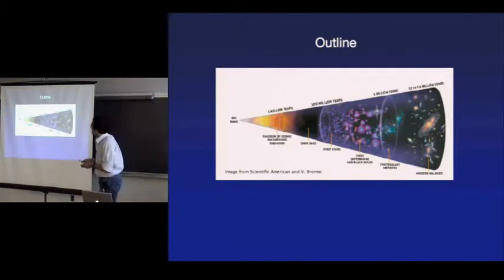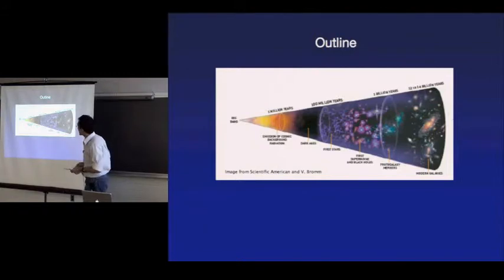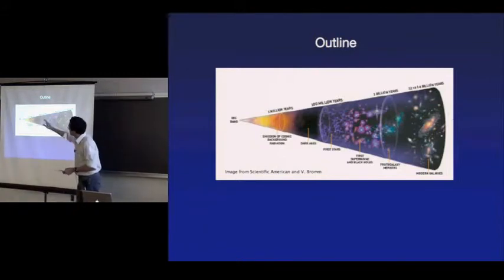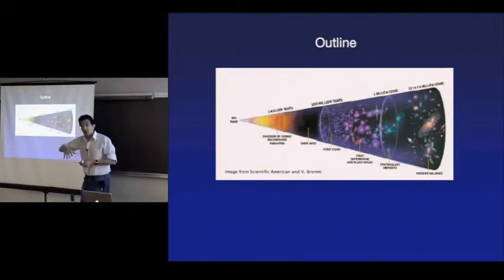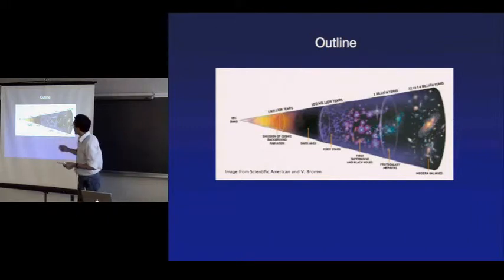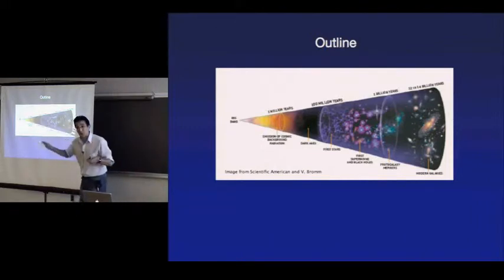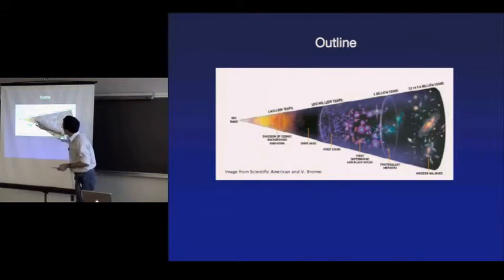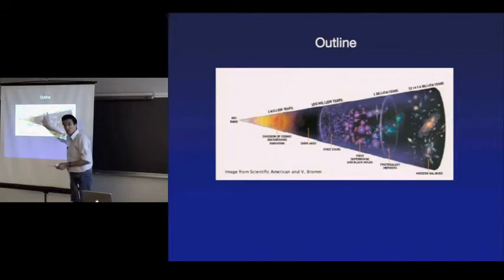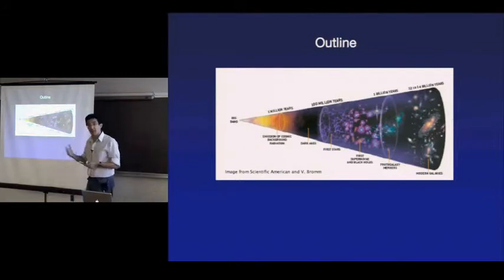The basic picture: our standard view of how the universe got to where it is today. The Big Bang 13.7 billion years ago, recombination some million years after that, the universe becoming neutral and entering the so-called dark ages where there's no visible light — just the microwave background. Then, what happens next is important because these processes determine the foundations for everything else.